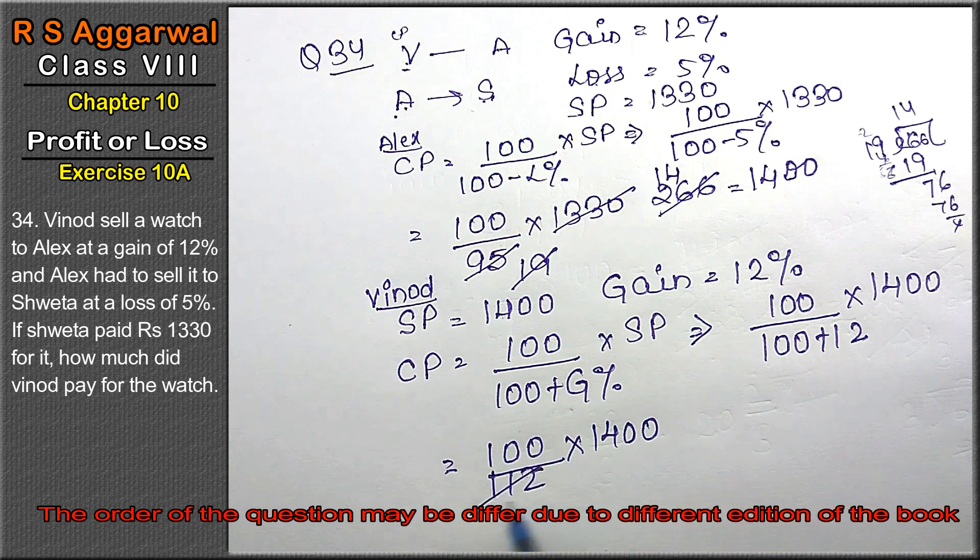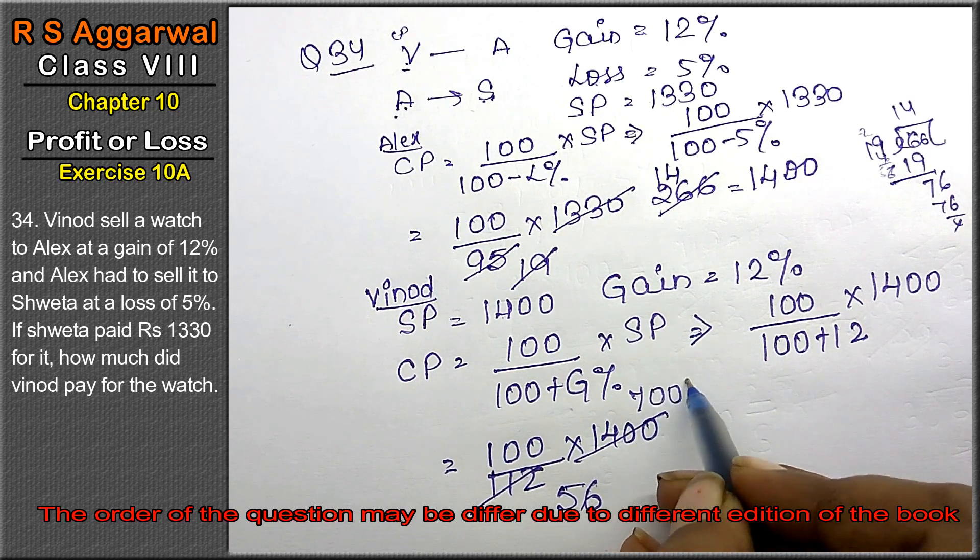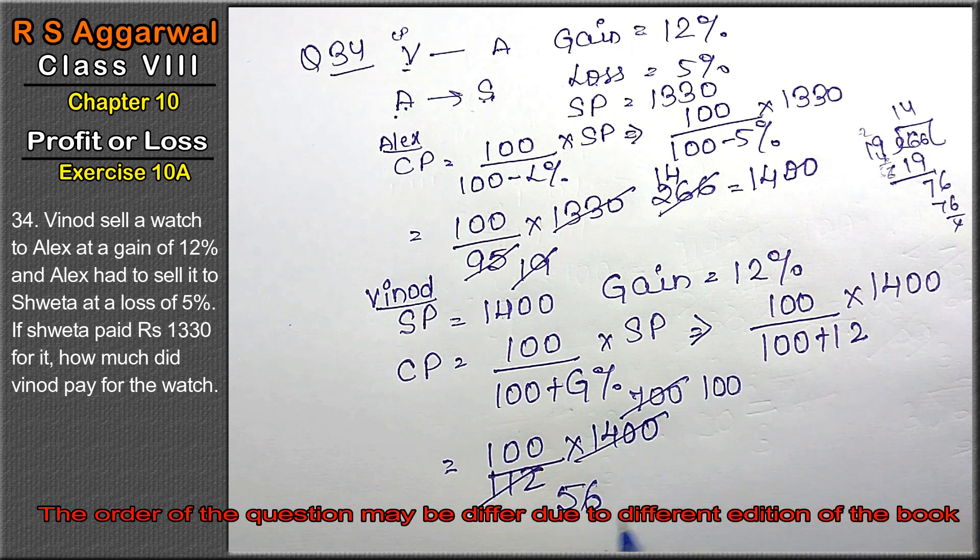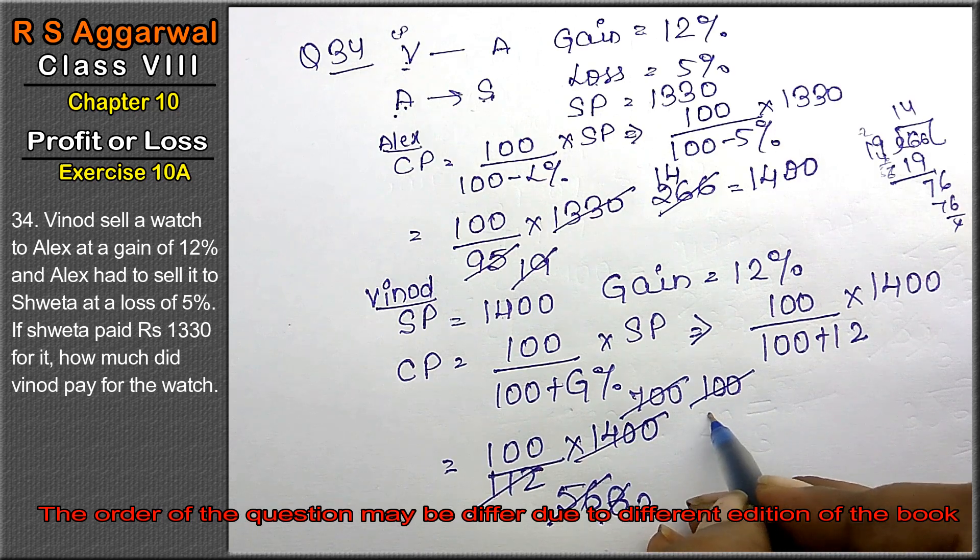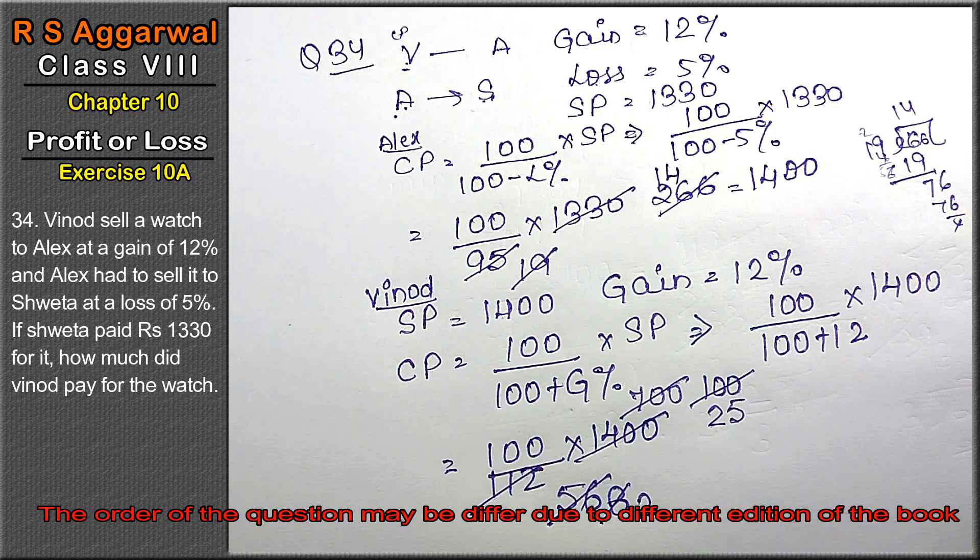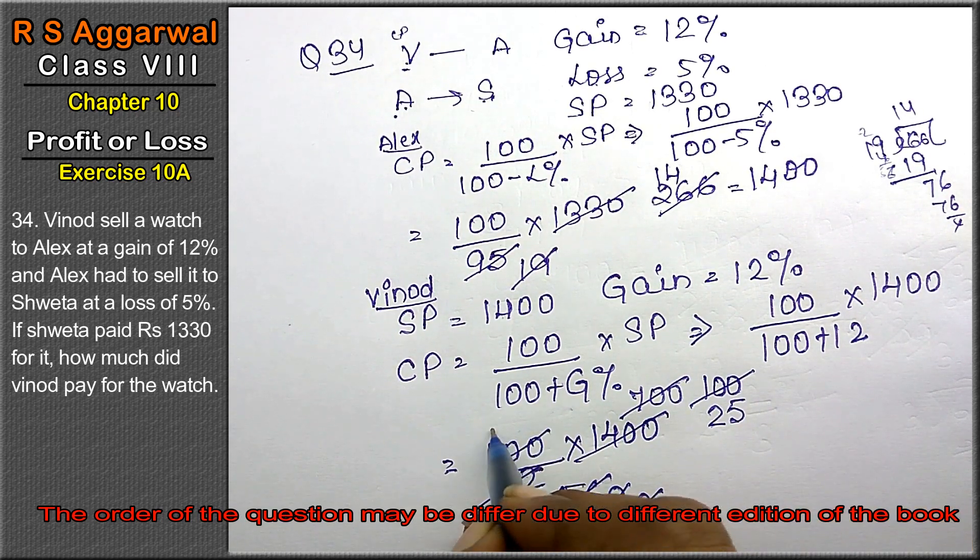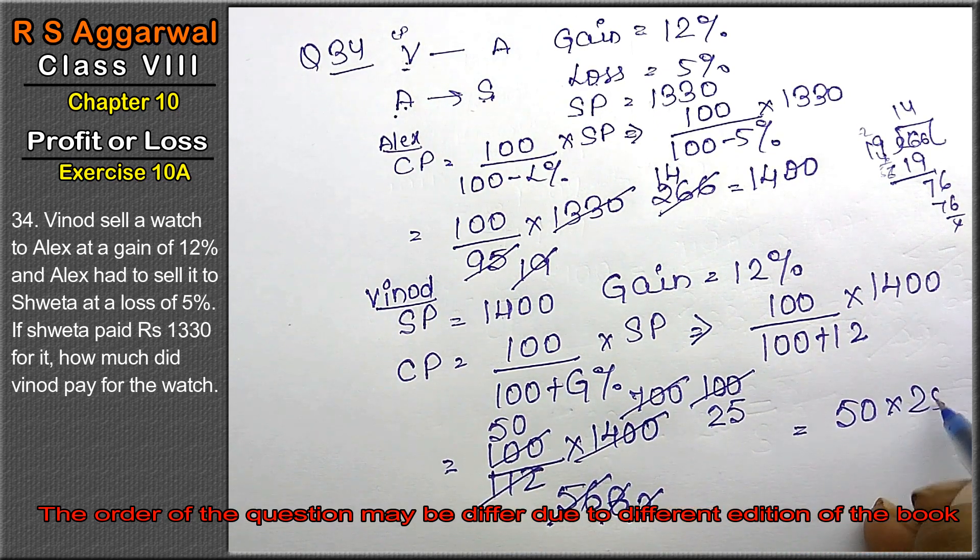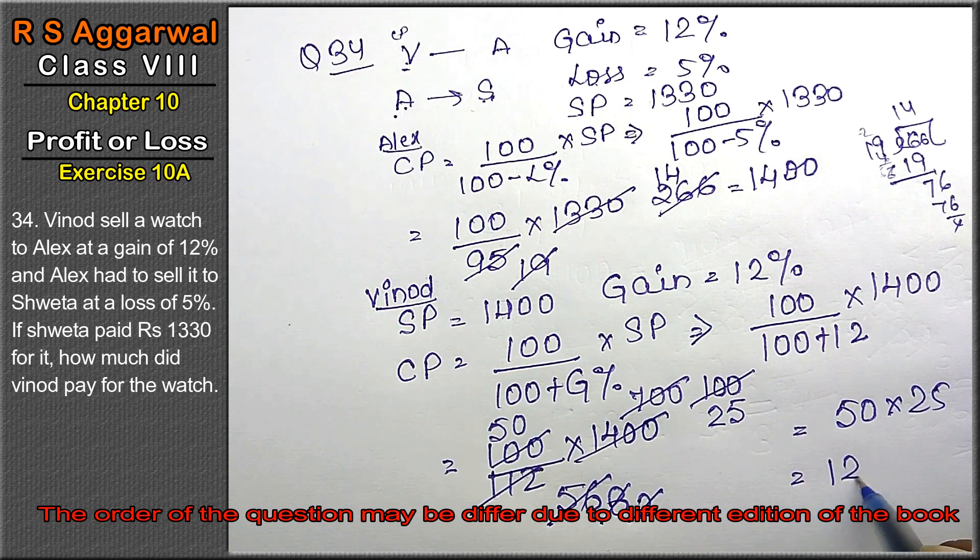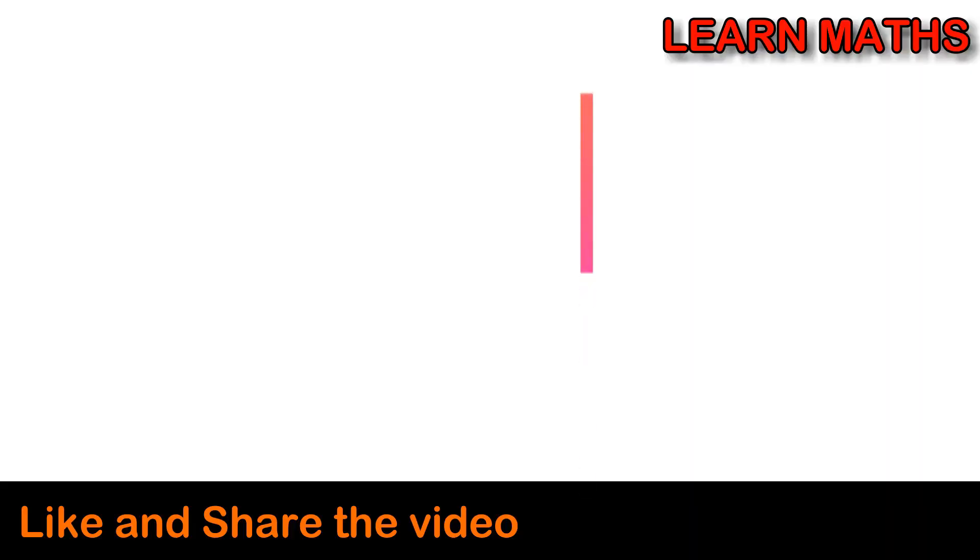Now, 2 fives are 10, 2 sixes are 12, 2 sevens are 14, 7 ones are 7, 7 eights are 56. Right friends? 4 twos are 8, 4 twos are 8, 4 fives are 20, 2 ones are 2, 2 fives are 10. That means 15 into 25 equals 1250 is the CP of Vinod. Thank you.